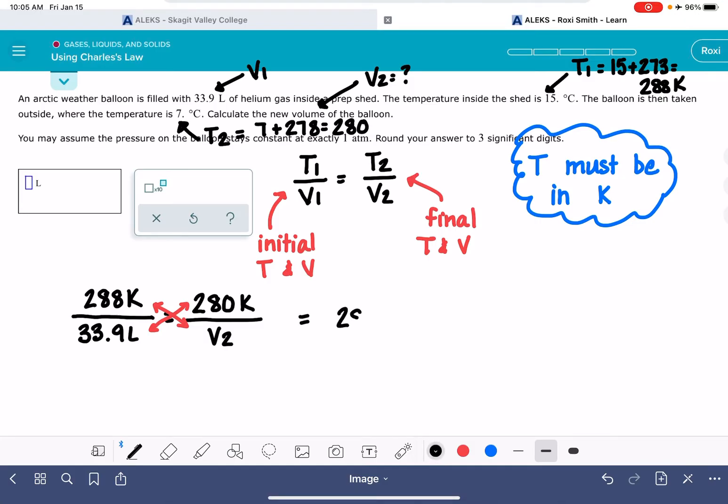That gives us a rearranged equation of 288 Kelvin times V2. That's these two is equal to, I'm going to take this equal sign away, equal to these two numbers multiplied by each other, 33.9 liters times 280 Kelvin.